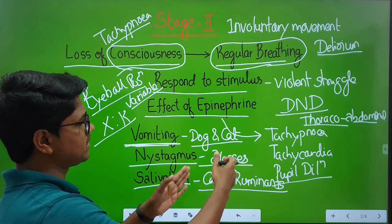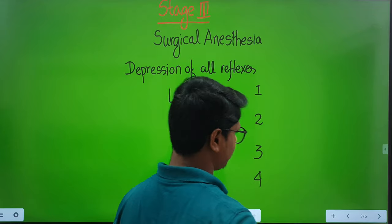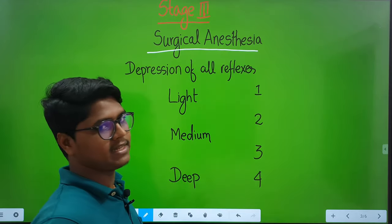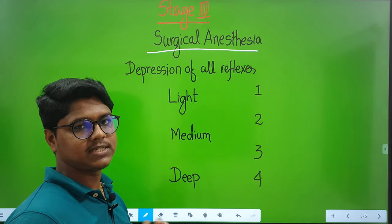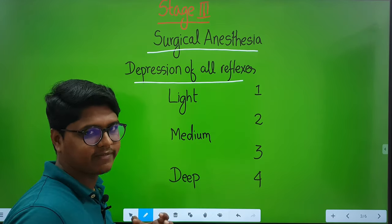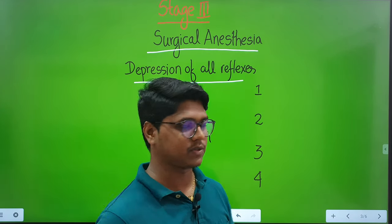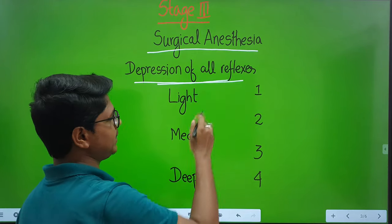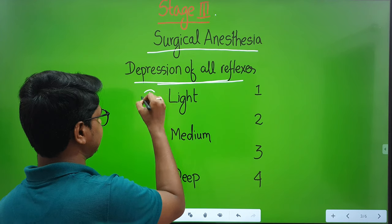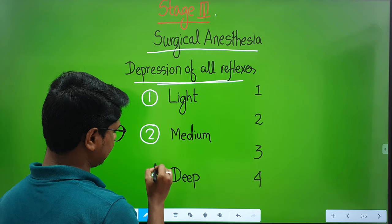At the end of Stage 2, you will find regularization of the breathing pattern. Here comes Stage 3. Stage 3 is also known as the stage of surgical anesthesia — in this stage all surgeries are performed. In this stage, you will find depression of all types of reflexes. This stage has been divided into three planes: the light plane, the medium plane, and the deep plane.